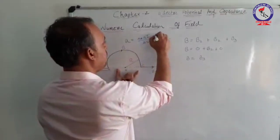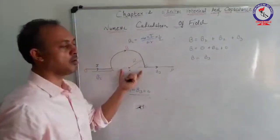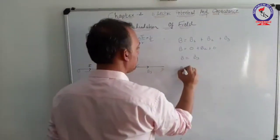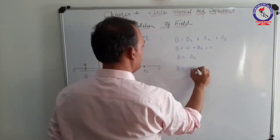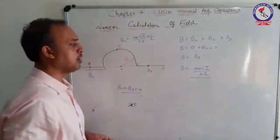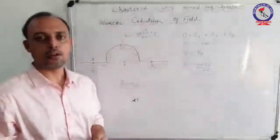What will we do? We will multiply it by a factor of 1 by 2. So what does the final expression come out to be? μ₀Ni by 4R. This will be the final expression.